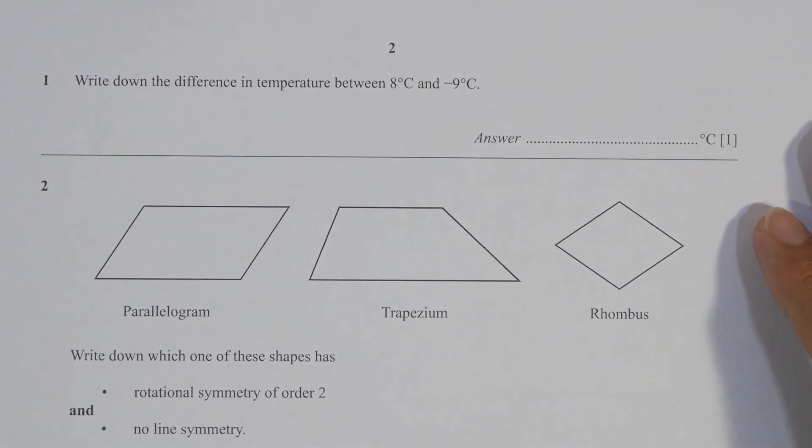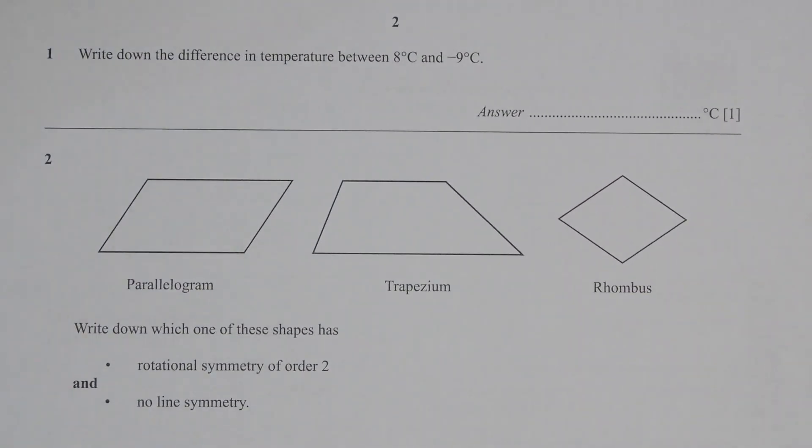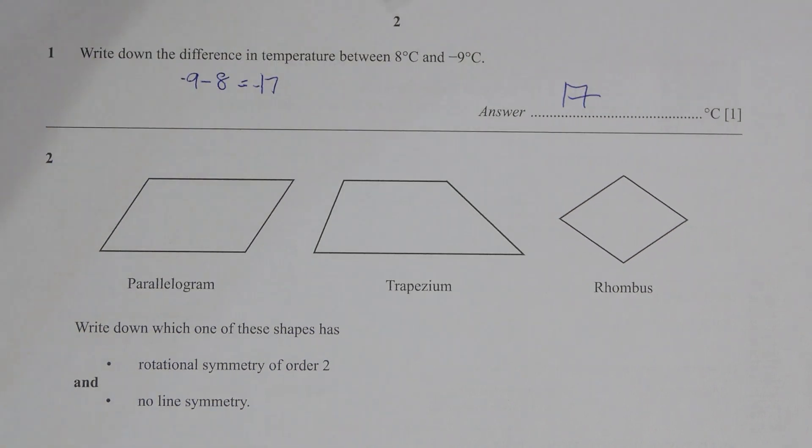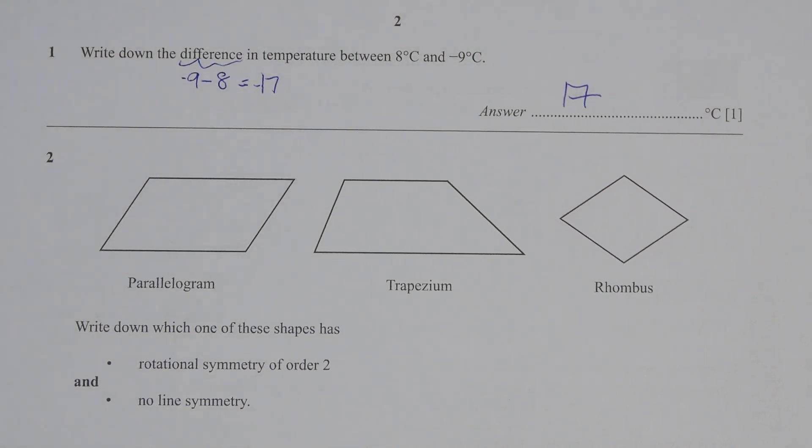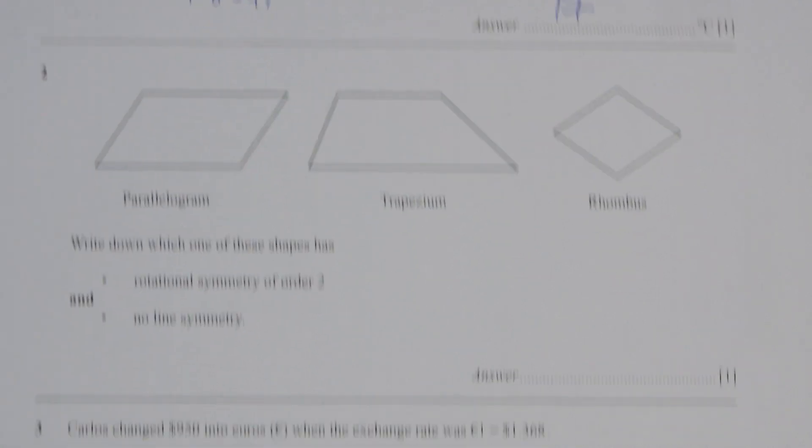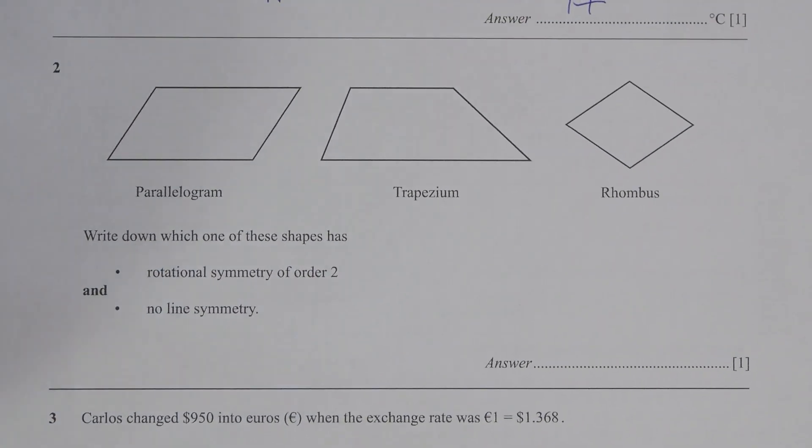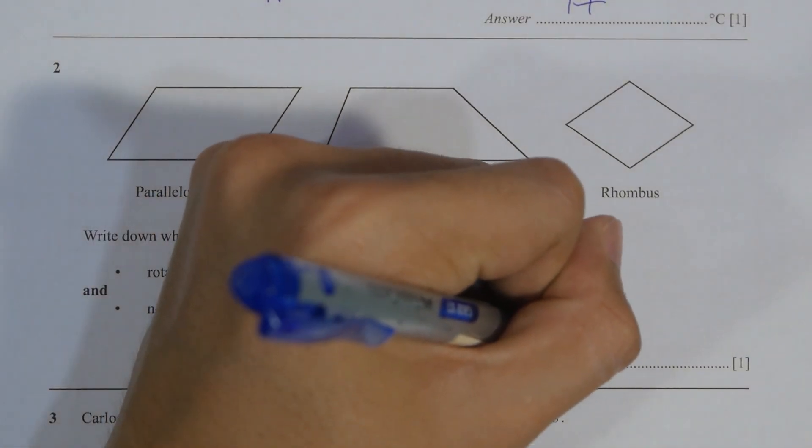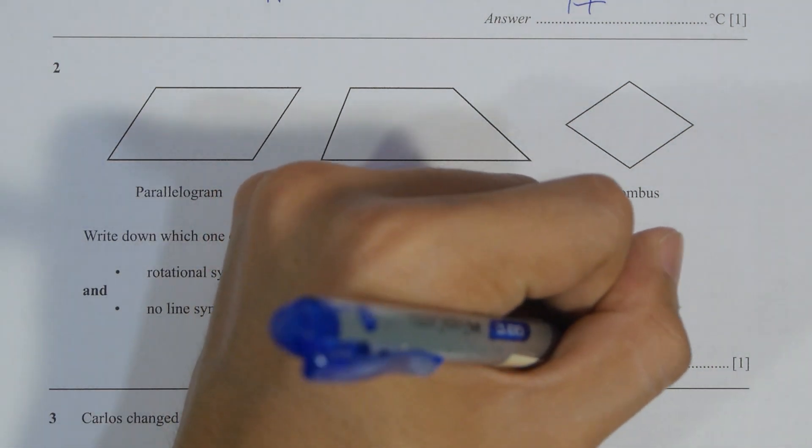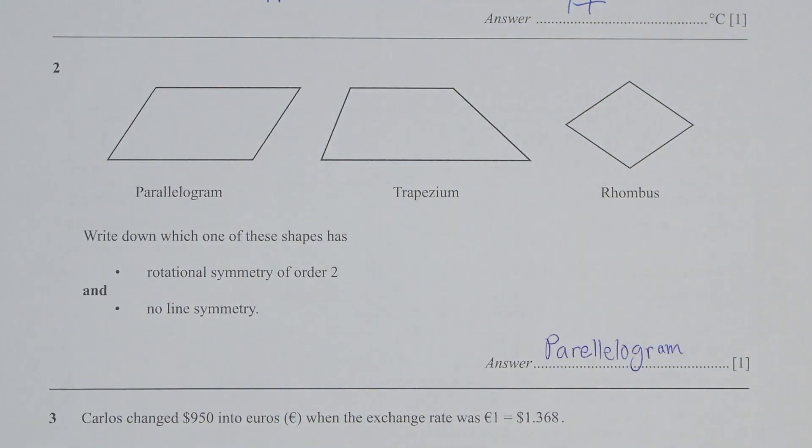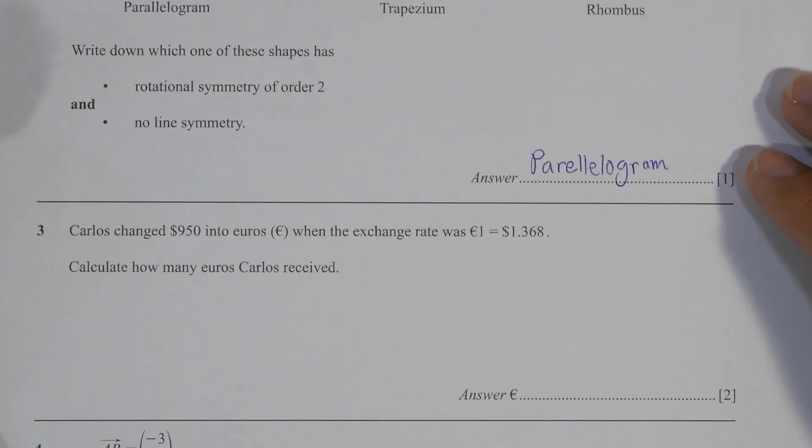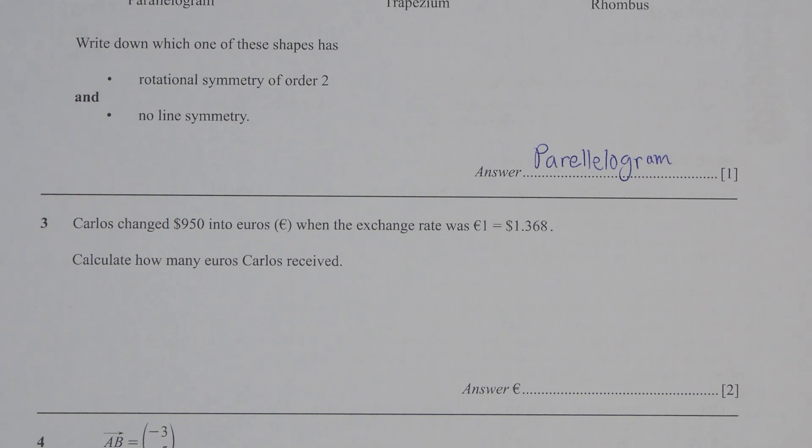For the first question, find the difference between 8 Celsius and negative 9 Celsius. So I simply take negative 8 minus negative 9, then you get negative 17. The difference here is actually 17 Celsius. For number two, this one will actually be the parallelogram because it is the only one that has rotational symmetry order of two, where trapezium only fulfills the requirement of no line of symmetry.